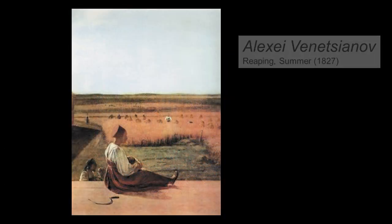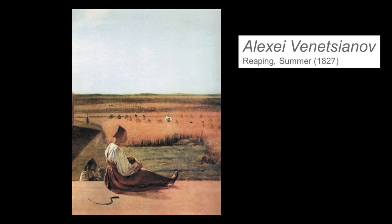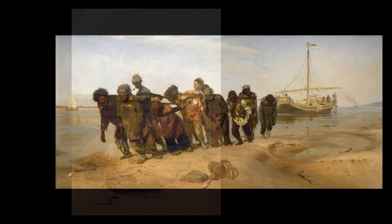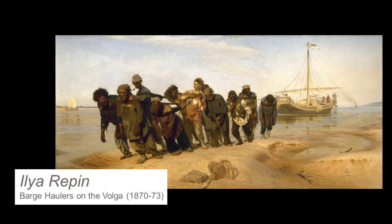Alexei Venizianov, Reaping, Summer, 1827. Peasants became popular subjects of Russian art in the early 19th century, and no one captured them better than Venizianov. His peasants, however, were idealized — poetic in appearance, they appear at rest or happily engaged in tasks. Society wasn't ready for the realistic paintings done by the next generation of Russian artists, the Wanderers.